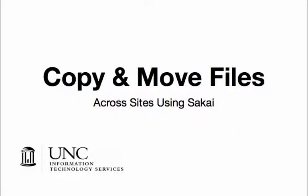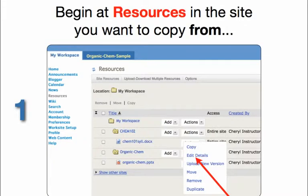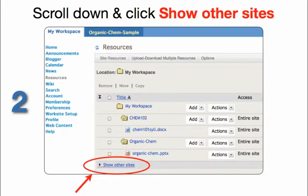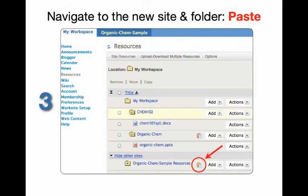Here's how to copy or move a file across sites using Sakai. First, begin at resources in the site that you want to copy from. You're going to copy. Next, scroll down so that you can show other sites and click that. Then third, navigate to the site that you want to paste into and click on the clipboard icon.